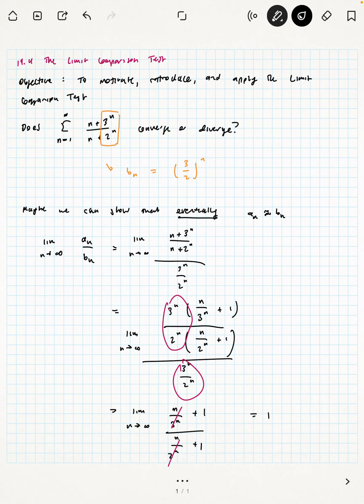And so the limit we have shown is equal to 1. So eventually, a sub n is like b sub n in the sense that the limit, as n goes to infinity, of the fraction of the 2 is equal to 1.